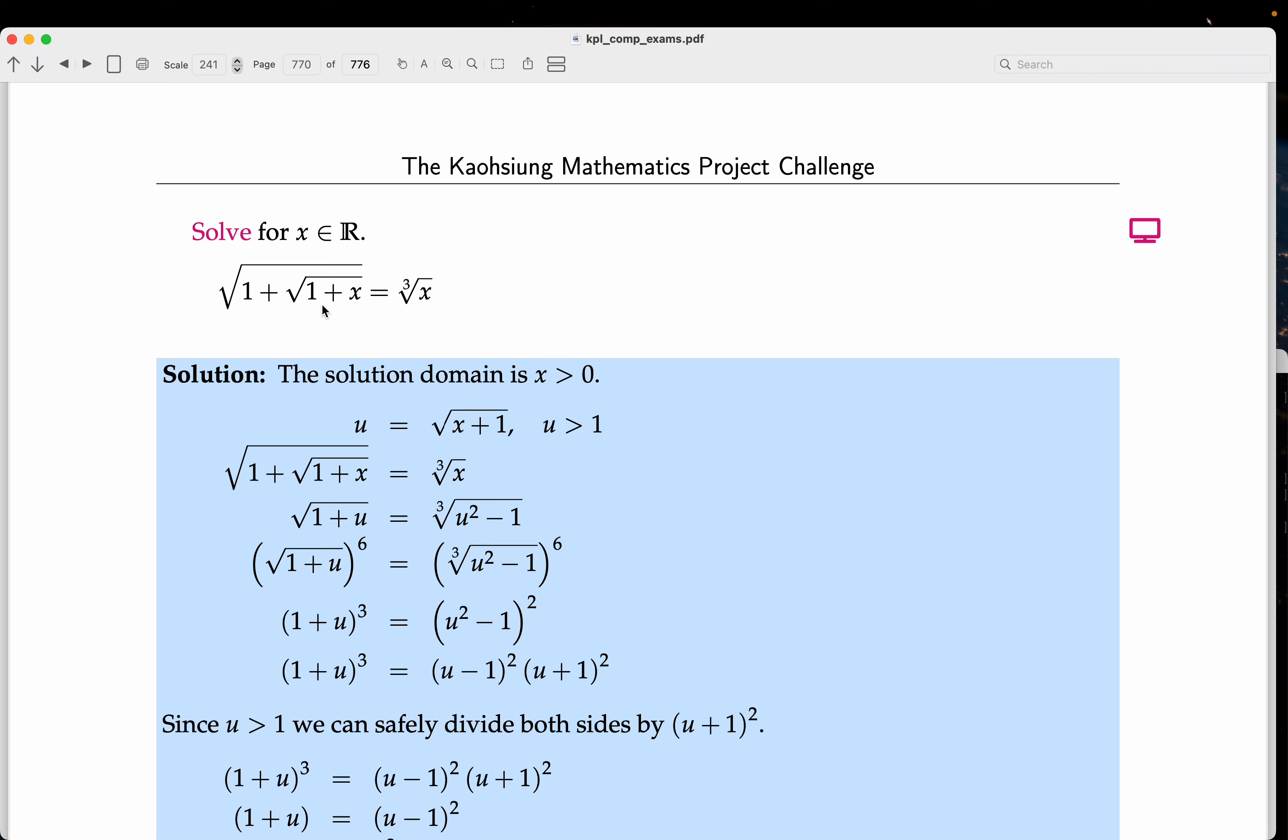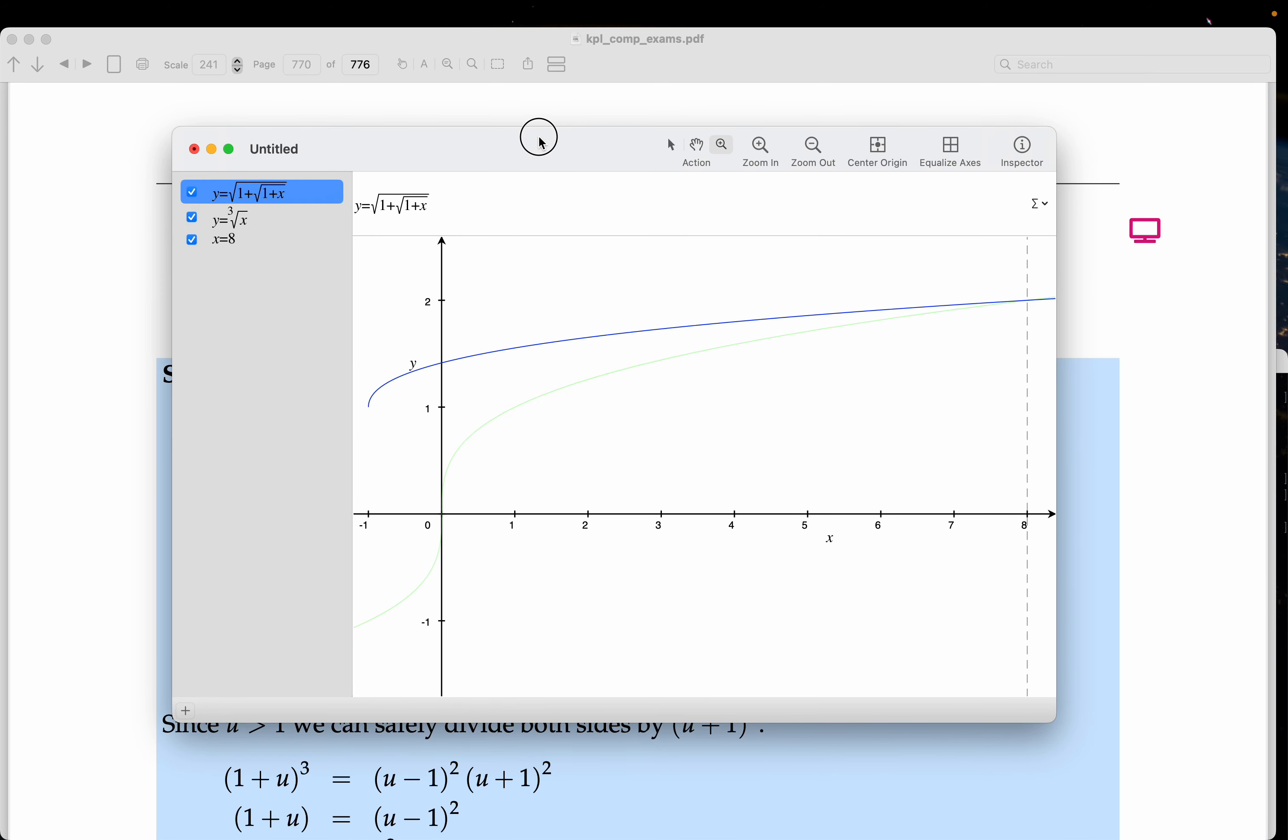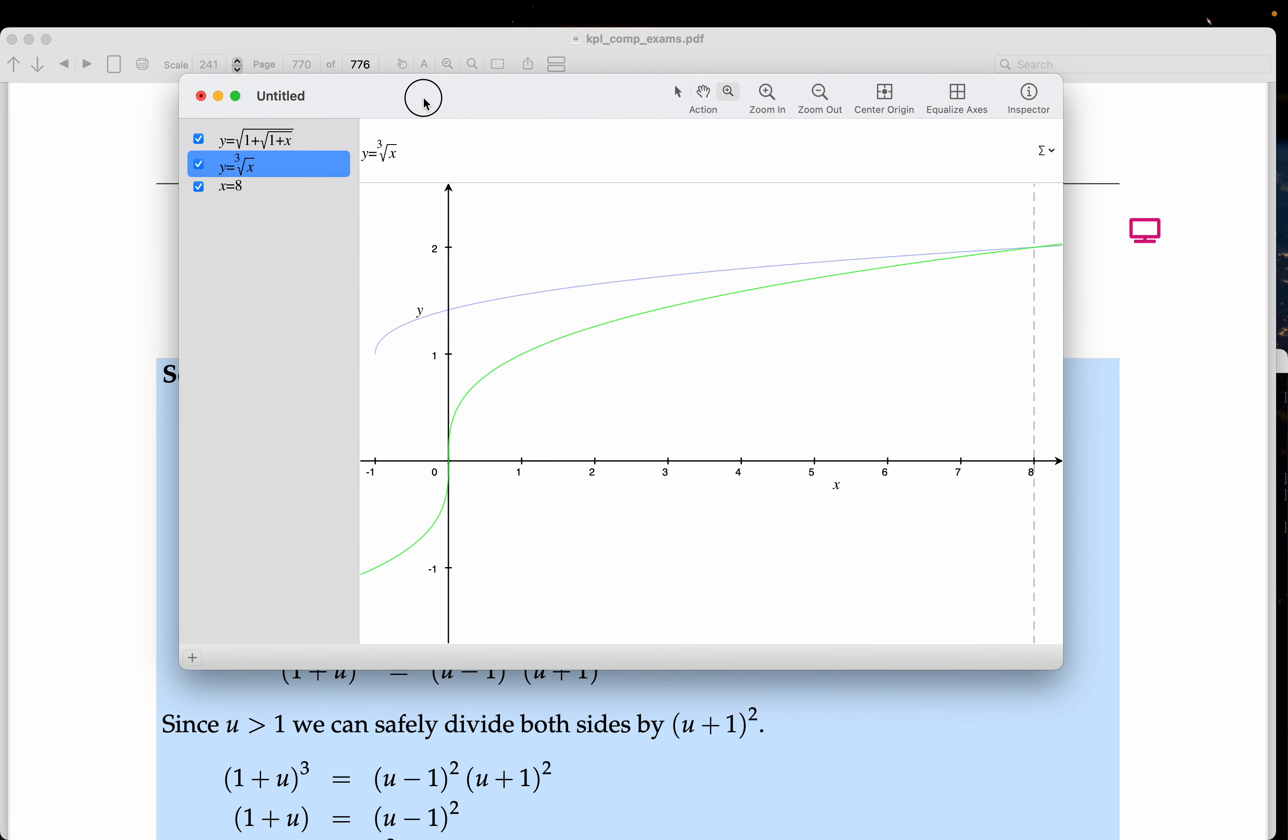But what I want to do is I'm going to go to an application called Grapher and look at it. And what am I looking at? I'm going to graph the left-hand side, which is this nested root, and that's the blue curve over there. I'm also going to graph the right-hand side, which is the cube root of x, which is the green curve over there.